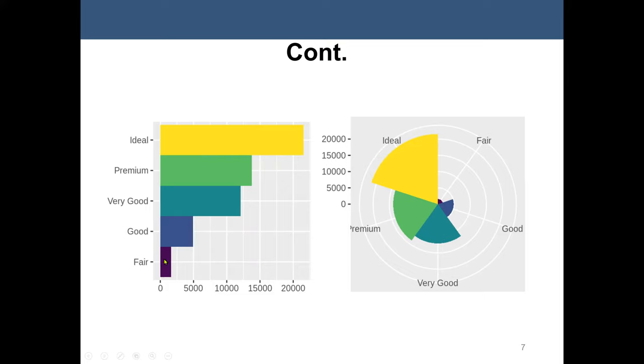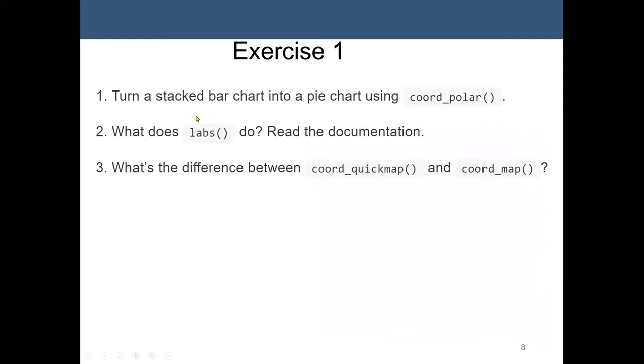So we are going to switch there. This is our graph, the first option. The second, we set the polar. And also we flip it. So we can see we are very good, good, fair, et cetera. So this is our polar. And this is the bar.